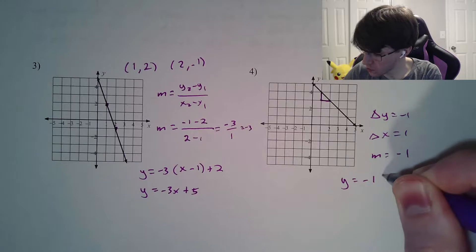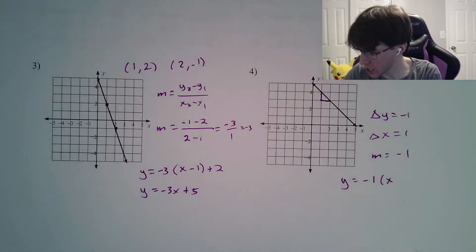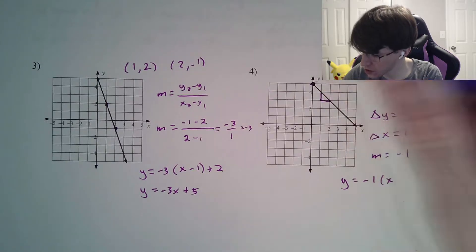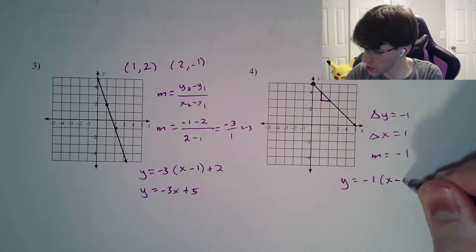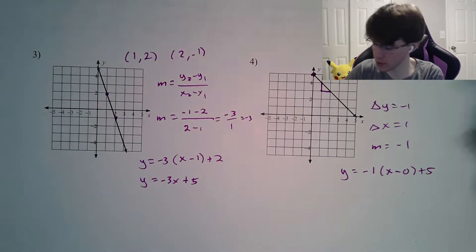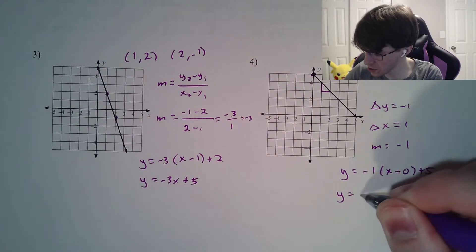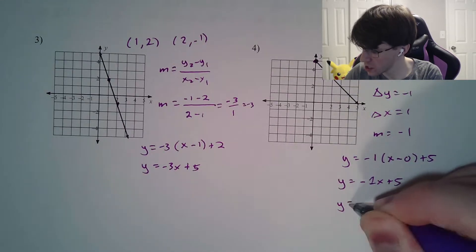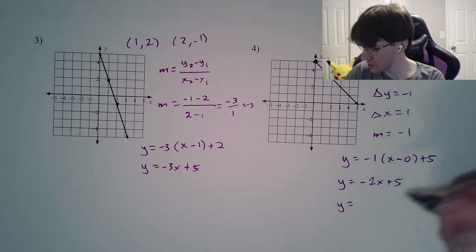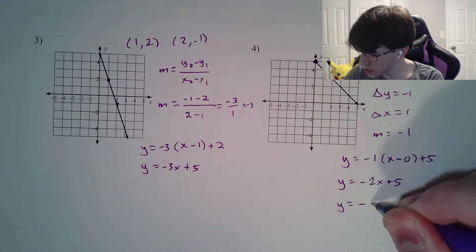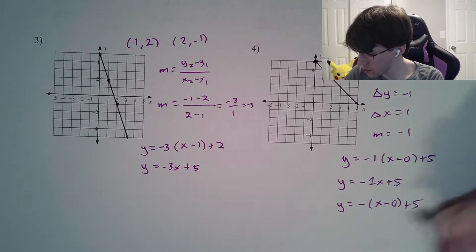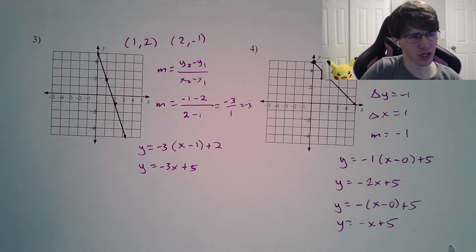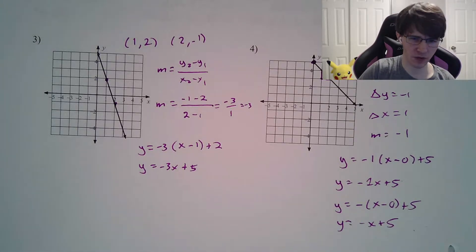So y equals negative 1 times x. We pick a coordinate — I'll start up here — x minus 0 plus 5, which is exactly the same as the slope-intercept form of negative x plus 5. You did not need the negative 1 in either of those. It's actually even more standard not to write the 1 when you're multiplying.